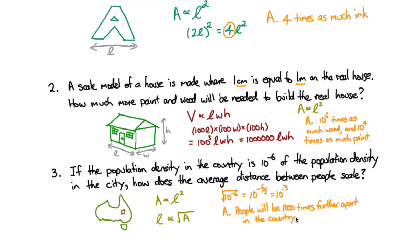And for the population density we had to spot the population density was something per unit area and so that the length was going to go down as the square root of that. And once you get somewhat comfortable with these kinds of scaling arguments it becomes much easier to estimate things that are outside your experience by relating them to things that are in your experience.